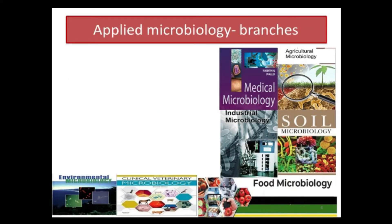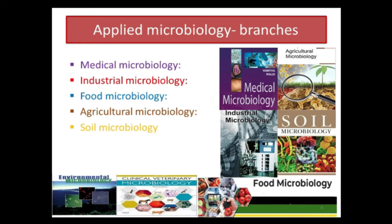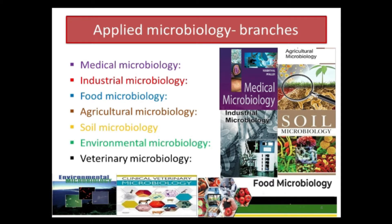The applied microbiology has different branches like medical microbiology, industrial microbiology, food microbiology, agricultural microbiology, soil microbiology, environmental microbiology, and veterinary microbiology. Medical microbiology is concerned with the prevention, diagnosis, and treatment of infectious diseases. Industrial microbiology applies microbial sciences to create industrial products in mass, often using microbial cell factories. Food microbiology is the study of microorganisms that inhabit, create, or contaminate food.